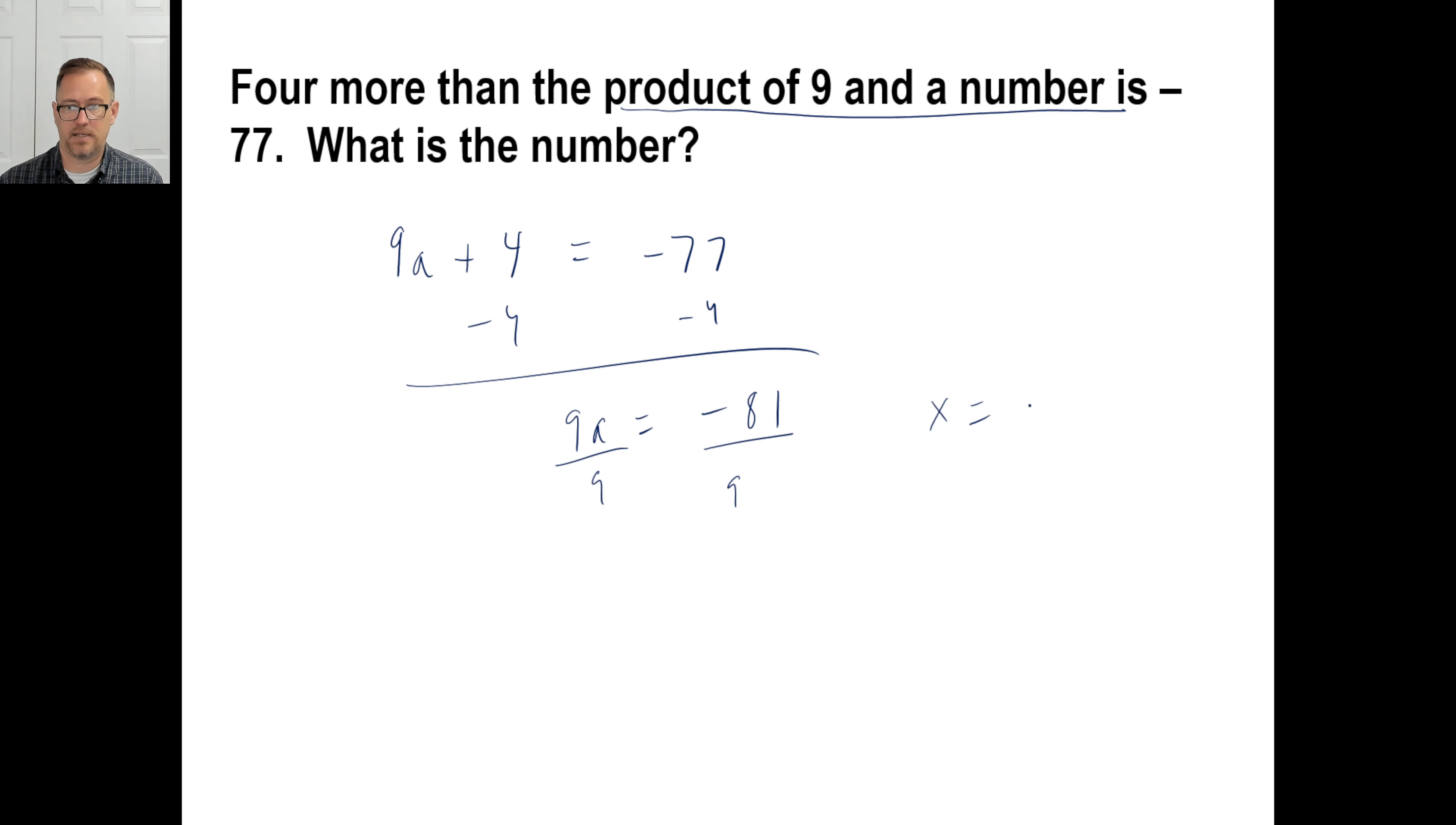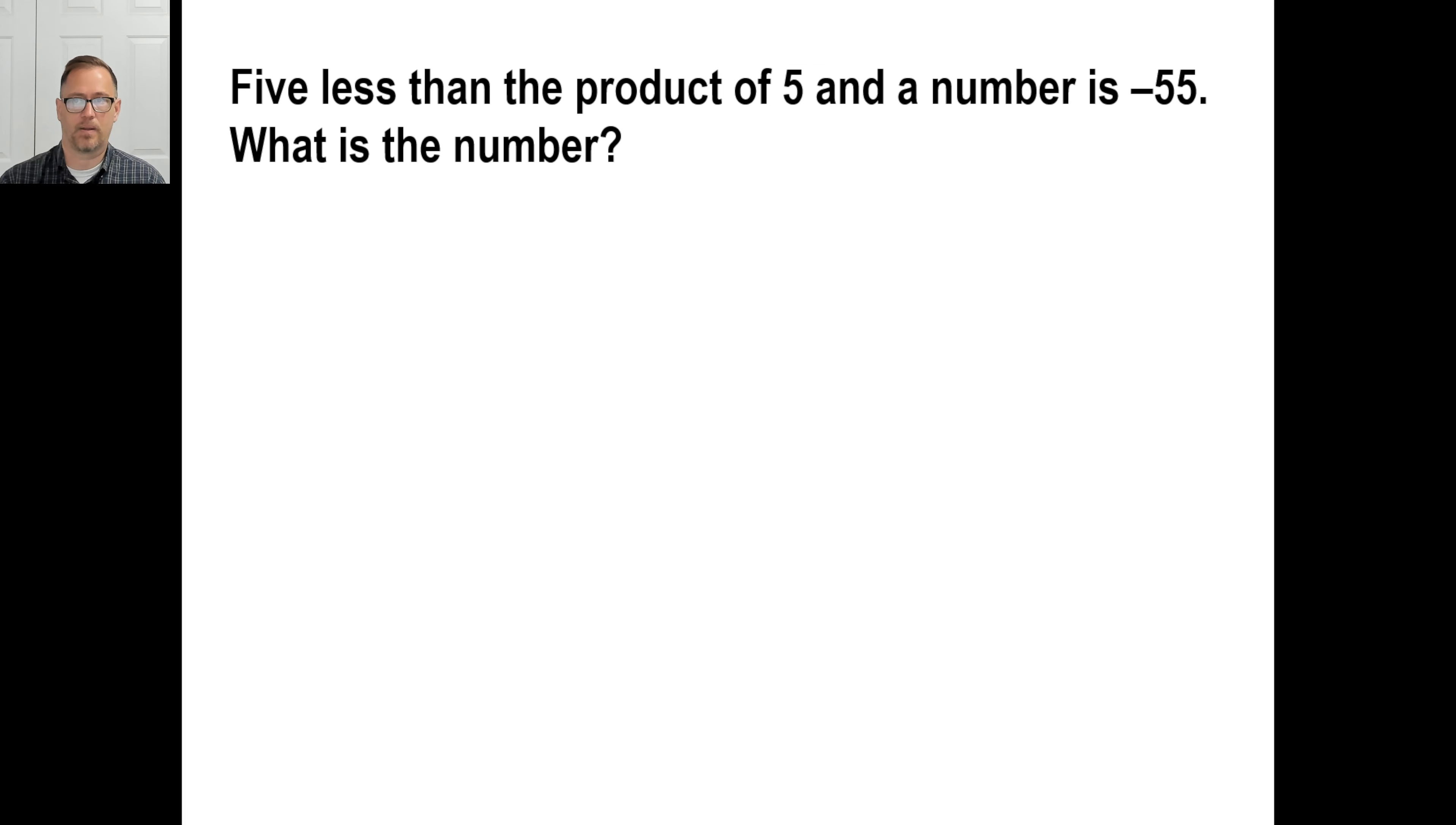Last one. Pause it and give it a whirl. Okay. Five less than. I've got the product of five and a number. And I've got is and I've got negative 55. So five less than something. I'm going to subtract five from something. The product of five and a number is five times X is equals negative 55. There we go.